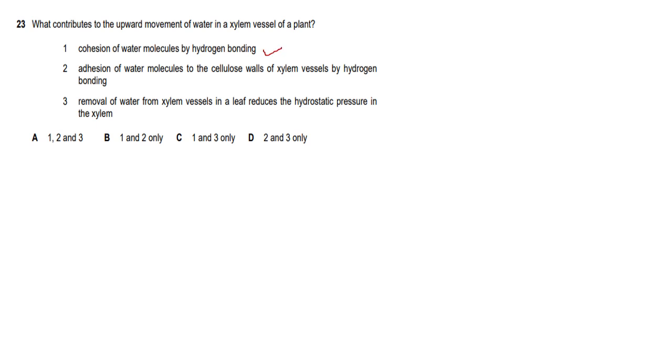Question twenty-three: what contributes to upward movement of water in the xylem vessel? Number one — cohesion of water molecules — definitely correct. Number two — adhesion of water molecules to cellulose — also correct. Number three — removal of water from xylem vessels in the leaf reduces hydrostatic pressure — also correct. All three are correct, so the answer is A.